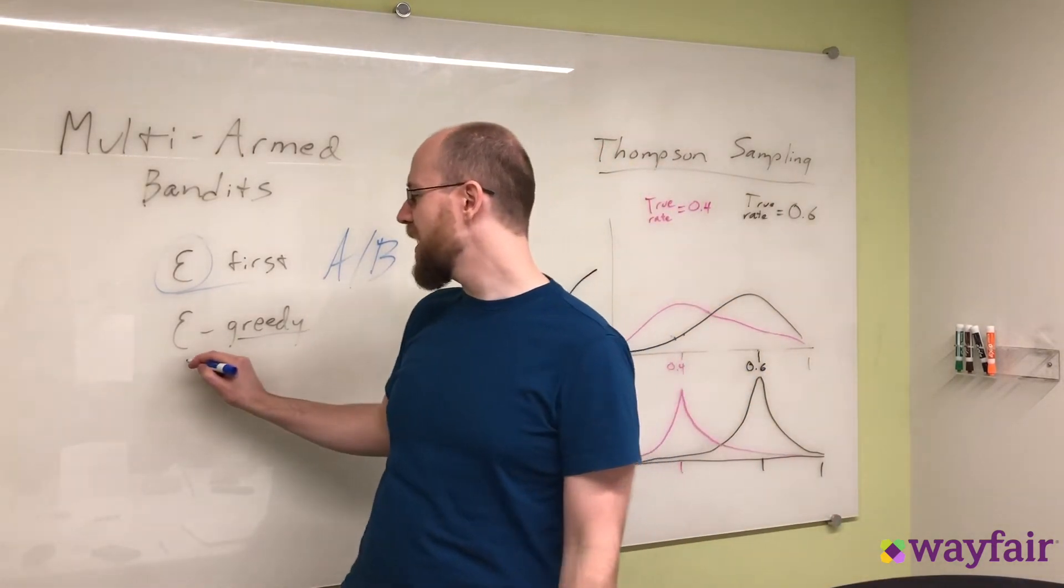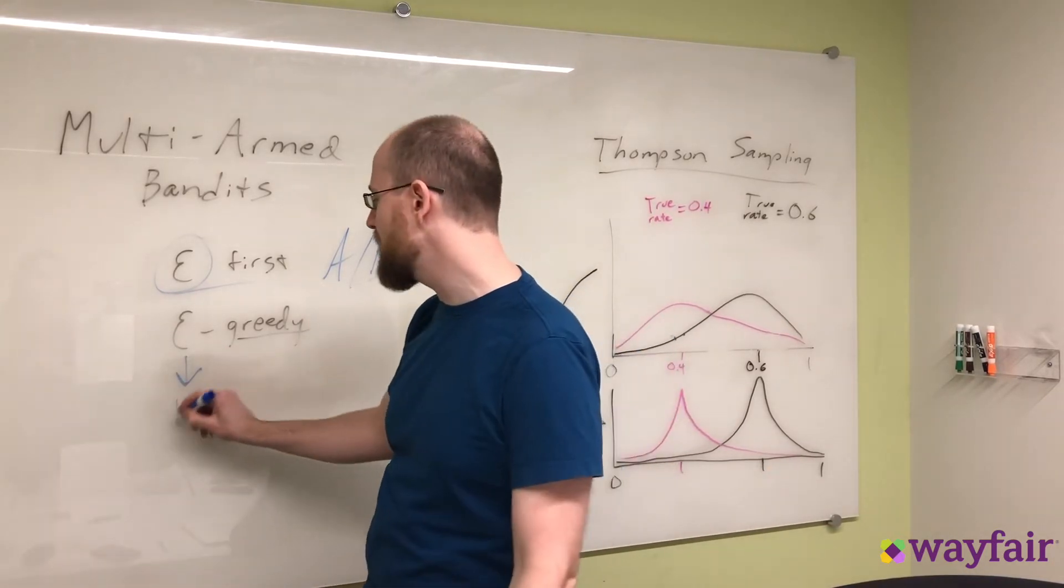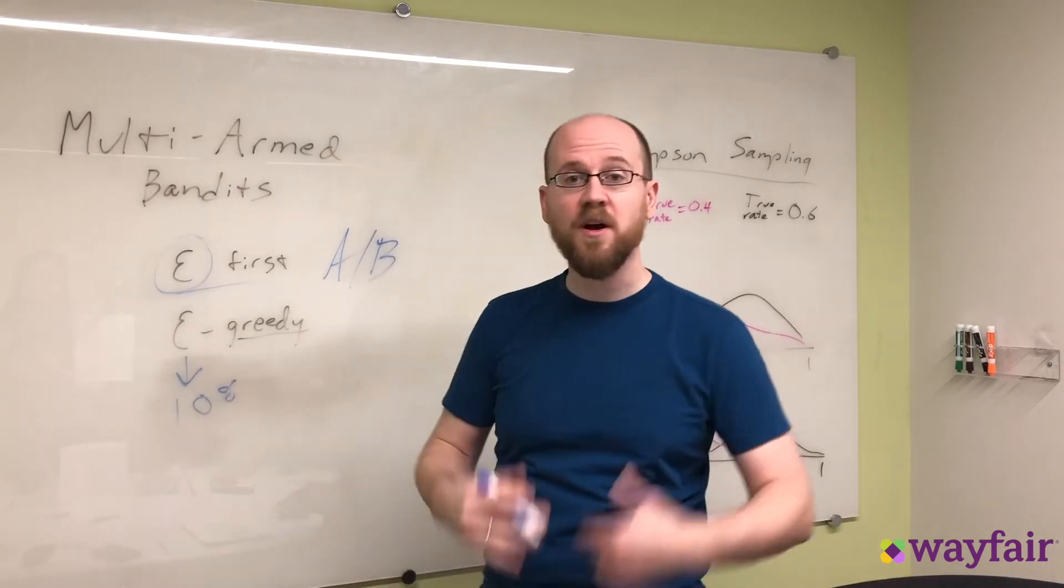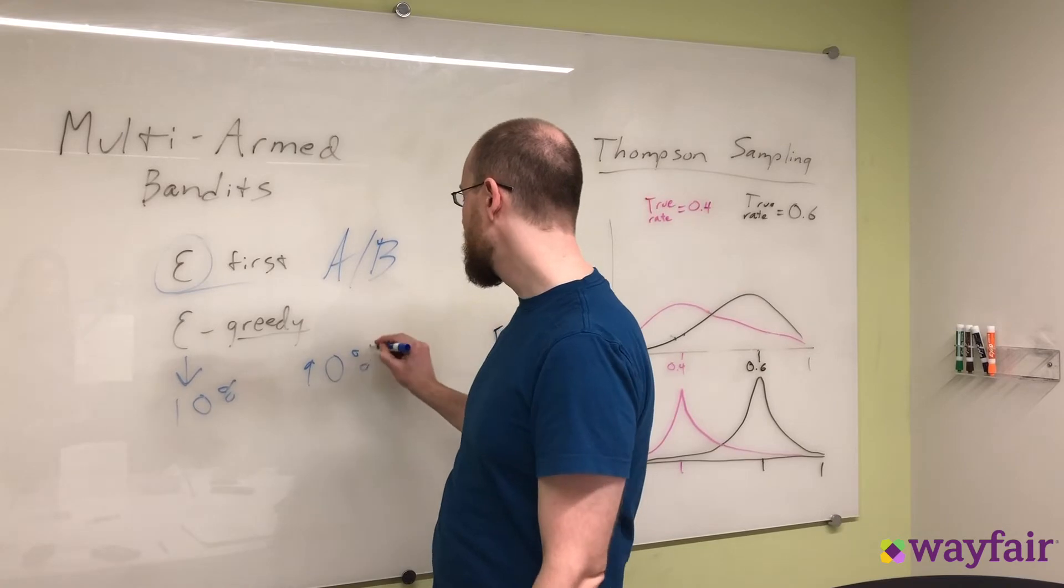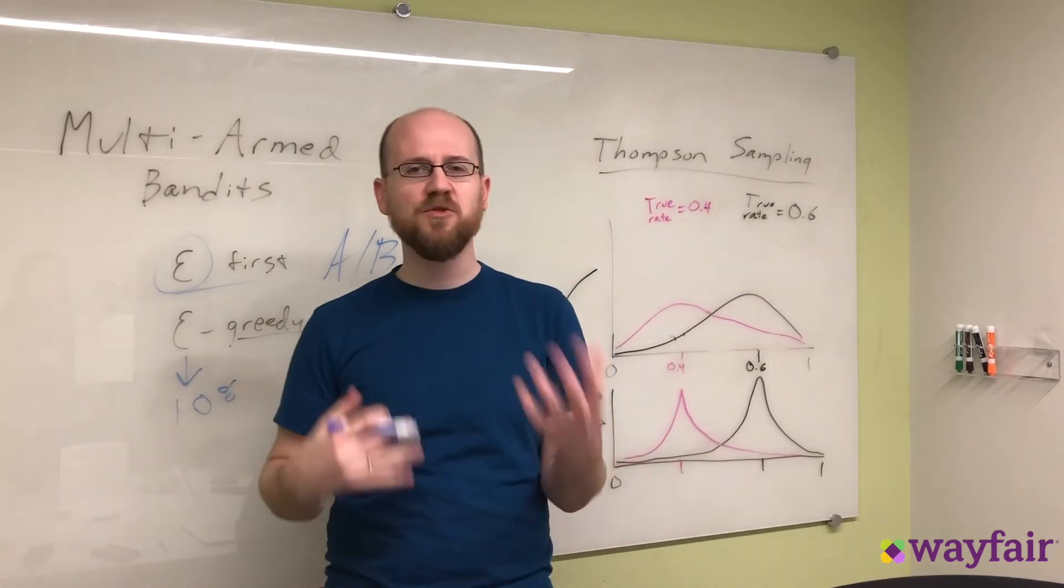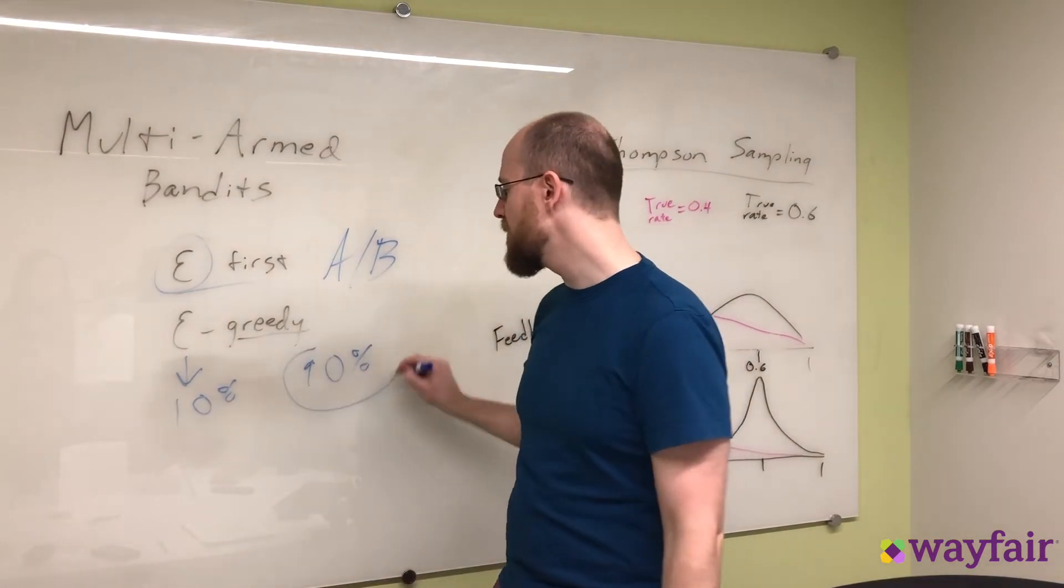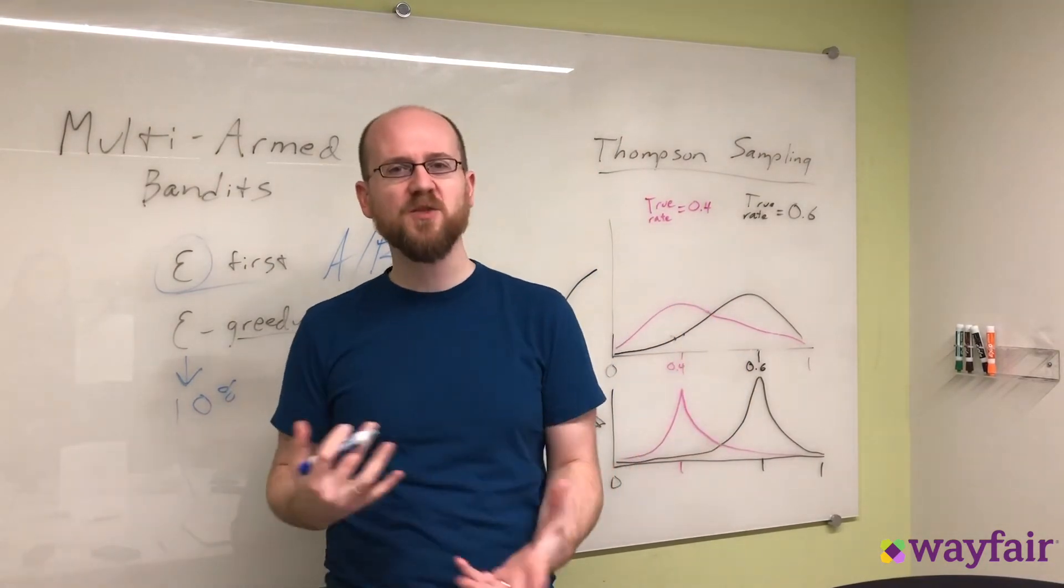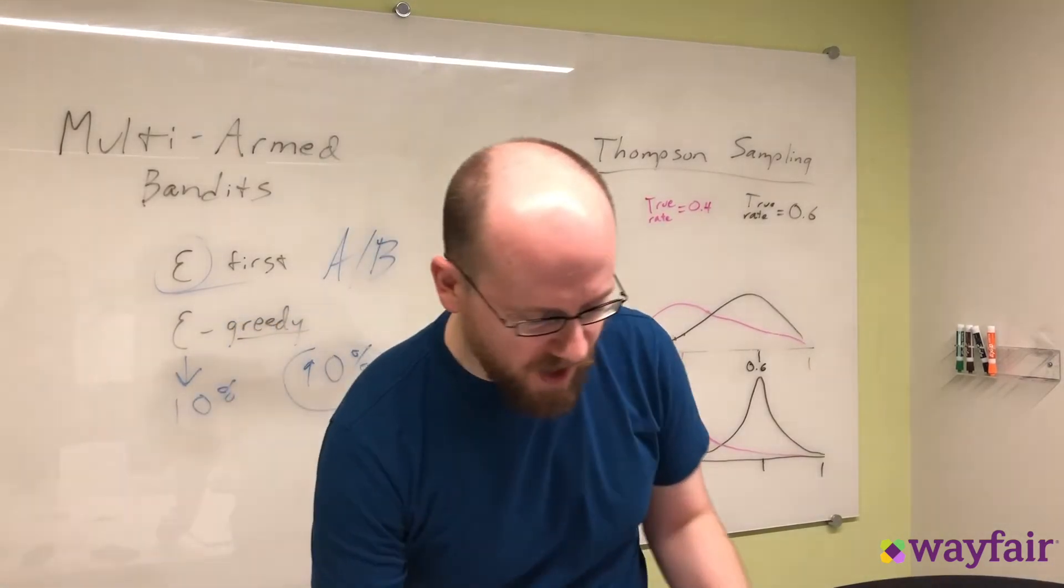Another very common one, epsilon greedy. In this case, you choose a small amount of the time, let's say 10% of the time, where you are going to epsilon or explore. The rest of the time, you will exploit. So 10% of the time, you're going to choose a random order, put a random ad up, and then the rest of the time, you're going to do the best one that you've found so far, and try to make some money. So both of those are very common.